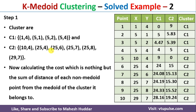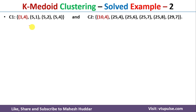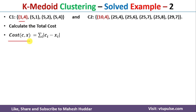After the cluster assignment, we need to calculate the total cost. To calculate the total cost, we find the distance from a medoid point to all non-medoid points within its cluster, and also the distance from a medoid to non-medoid points in the other cluster, then sum everything. The cost between a medoid point C and a non-medoid point X is defined as: cost(C, X) = Σ |Ci − Xi| over all features i.